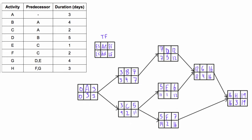If you recall from the previous videos, we can find the total float by subtracting early finish from late finish, or early start from late start. Doing it with starts is called start float and with finishes is called finish float, but it's actually the same number either way. For example, 0 minus 0 is 0, and 3 minus 3 is 0, so activity A has a total float of 0. Activity B: 3 minus 3 is 0, or 7 minus 7 is 0. Total float of activity D is also 0. Total float of activity G is 0, and total float of activity H is 0. You'll see in a minute that these form our critical path — but let's look at the other three nodes.